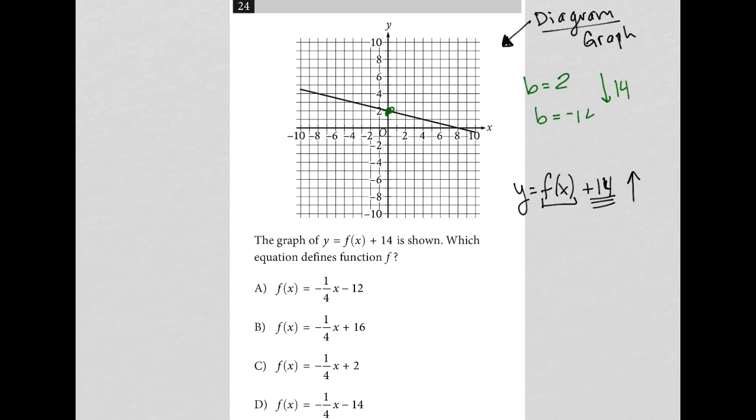Just knowing that b equals negative 12, our y-intercept. I have y = mx + b. I know that b equals negative 12 because our actual graph must be 14 units down. We're just reversing the 14 units vertically up that f(x) + 14 does. And the only answer choice that has a negative 12 in the b position is choice A.